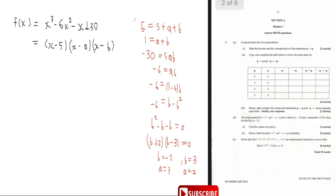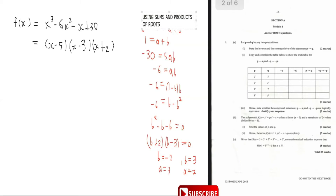So a = 3 and b = -2, giving factors (x - 5)(x - 3)(x + 2). Using sums and products of roots, f(x) = (x - 5)(x - 3)(x + 2). Make sure to tell the examiner you used sums and products of roots.